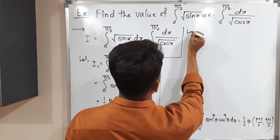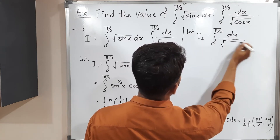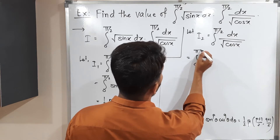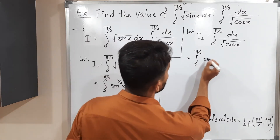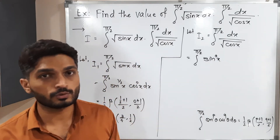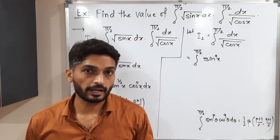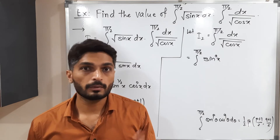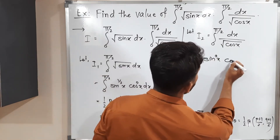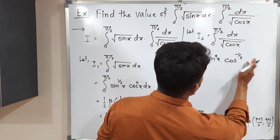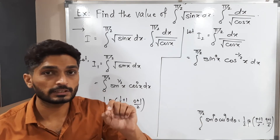Now I2 is equal to integration from 0 to π/2 of dx upon √(cos x). This is equal to integration from 0 to π/2 of sin^0(x) · cos^(-1/2)(x) dx. As you can see, there is only cos — there is no sin term, so we write sin^0 = 1. For cos, it is in the denominator with a square root, so the power is 1/2, and when we shift it to the numerator the sign changes, giving cos^(-1/2). So p = 0 and q = −1/2.